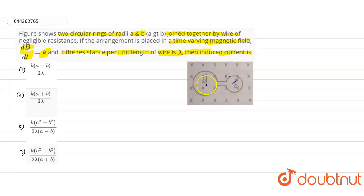b and the bigger circle radius is represented by a. This is placed in a time-varying magnetic field, which is represented as dB/dt equals k. The resistance per unit length of the wire is represented by λ. According to that, in order